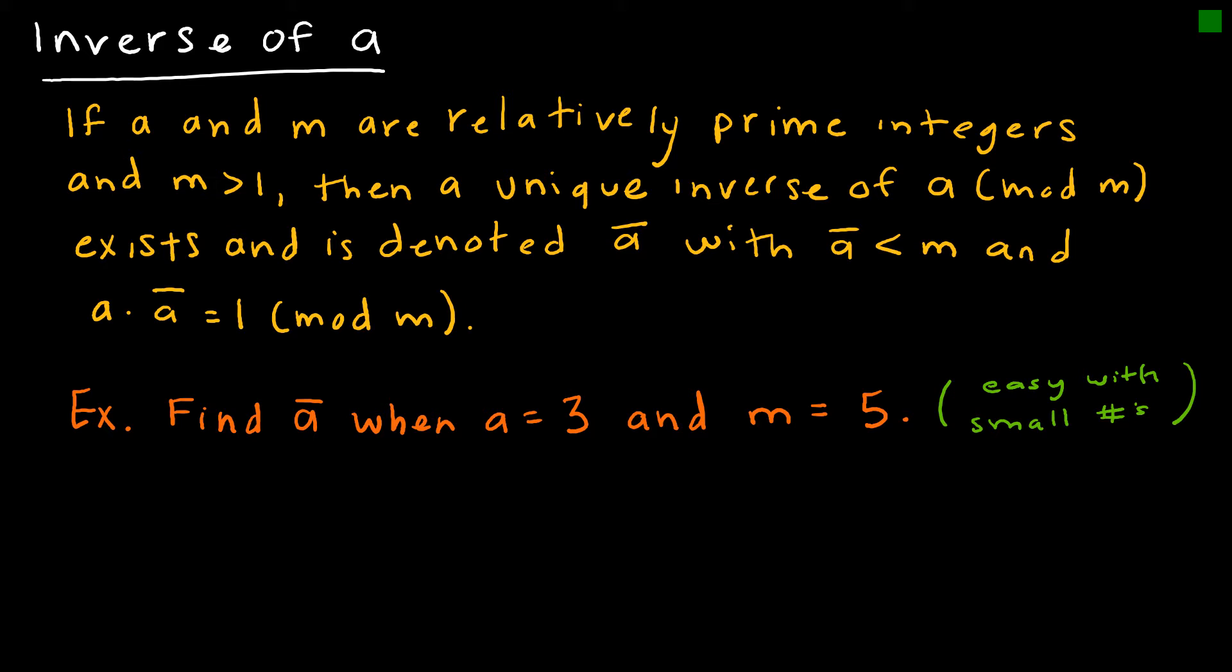So what is the inverse of A mod M? Well, if A and M are relatively prime integers, so what does that mean? Relatively prime means that A and M don't have any factors in common. And M is greater than 1, then a unique inverse of A mod M exists, and is denoted with a bar. So that would be the inverse of A. And the inverse of A is going to be less than M. And if I took A times the inverse of A, I should get 1 mod M.